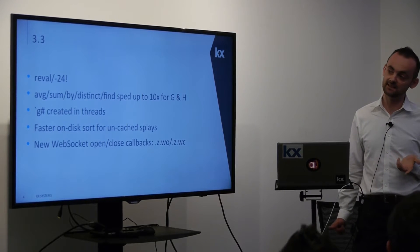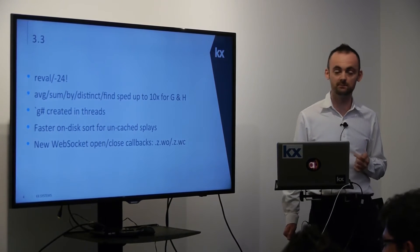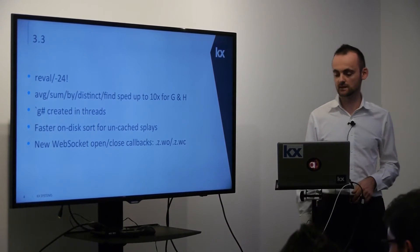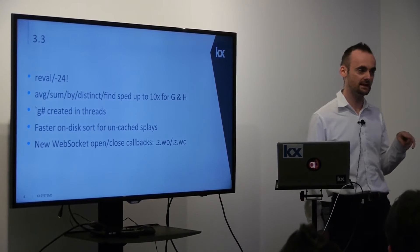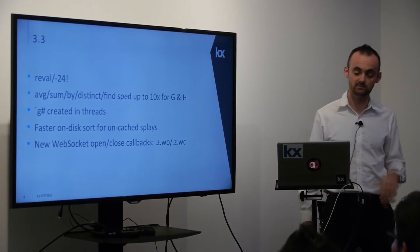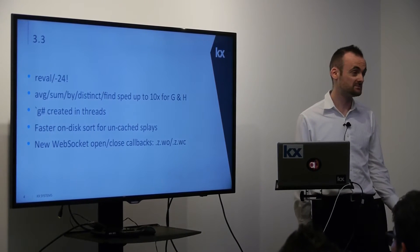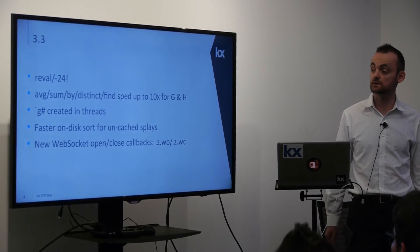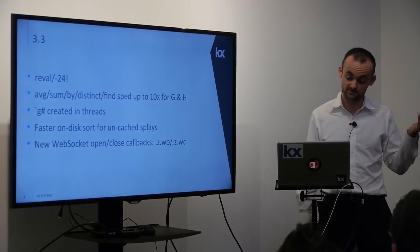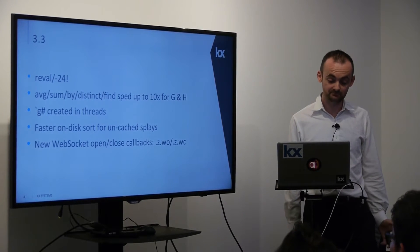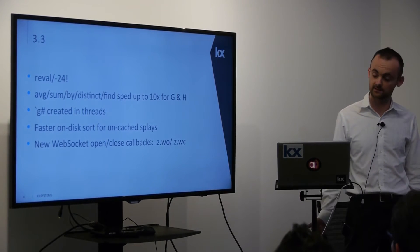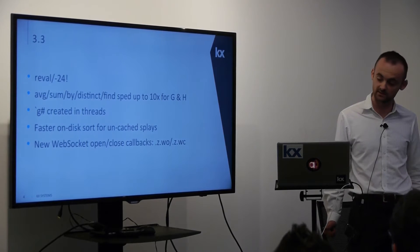We've reintroduced the capability to create G attributes in thread processes. That was taken out in version 3.2, and it's been reintroduced again, so you can apply a G attribute within a thread. There's also faster on-disk sort for cached splayed tables — if you're just doing a reorder of data on disk, it will be sped up. And there are two new callbacks: `.z.wo` and `.z.wc`, specific to opening and closing a web socket connection.